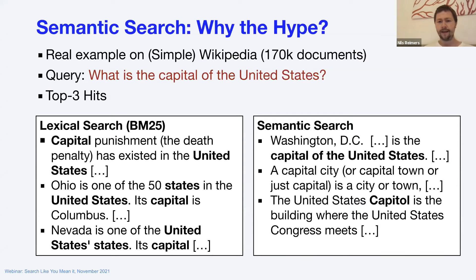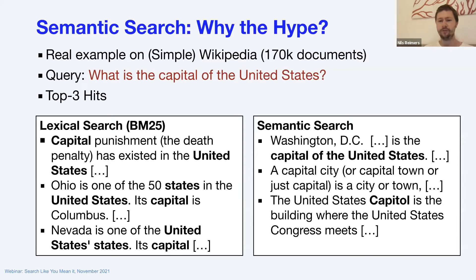In semantic search, if you input this into an out-of-the-box model, the first hit is about Washington D.C., so the user is happy. The second hit defines what a capital city is, and the third is about the United States Capitol — perhaps accounting for a misspelling of 'capital.' The results from semantic search are so much better that the user experience is completely different.